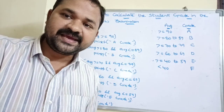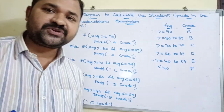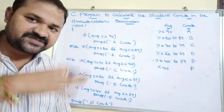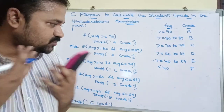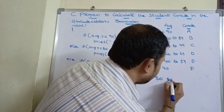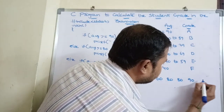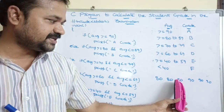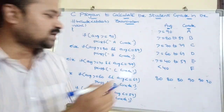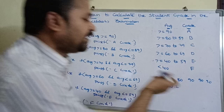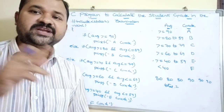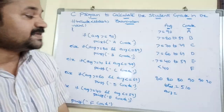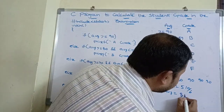Now let's see how this program executes. Execution starts from main. The message 'Enter six subject marks' is printed. Suppose we enter 80, 80, 80, 90, 90, 90. So M1=80, M2=80, M3=80, M4=90, M5=90, M6=90. Total = 80×3 + 90×3 = 240 + 270 = 510. Average = 510 / 6 = 85.